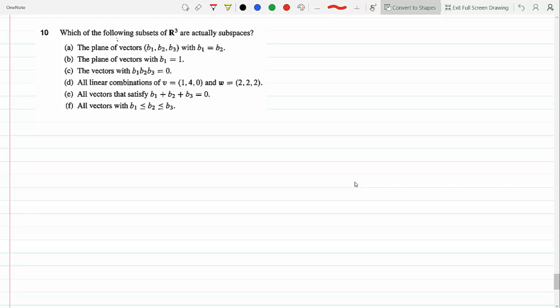Which of the following subsets of R³ are actually subspaces of R³? Part A, vectors B1, B2, B3 with B1 equal B2. To be a subspace of R³, it has to be closed under addition and scalar multiplication. I can combine these into one.